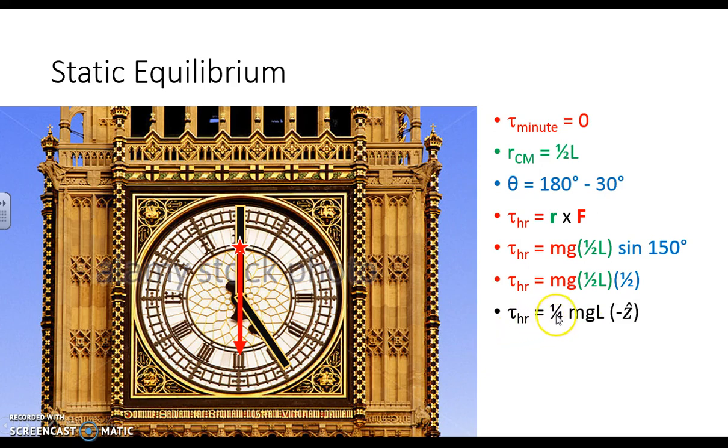Now, if the hour hand provides a torque of ¼mgL in the negative z direction, that means in order to keep our clock in equilibrium, this pin has to be capable of delivering a torque of ¼mgL in the positive z direction. Add the two up, and we keep the clock at rest for the hour to chime 5.